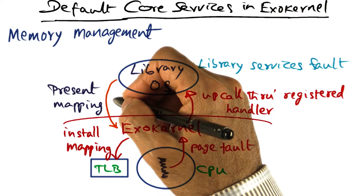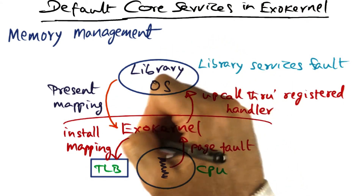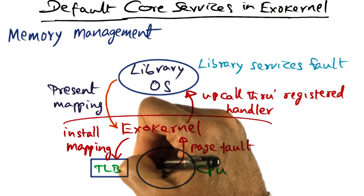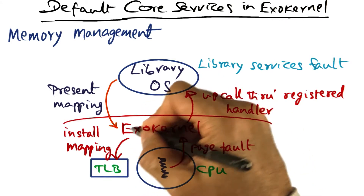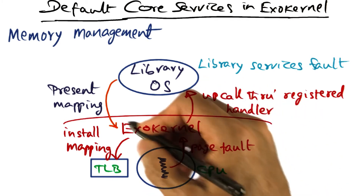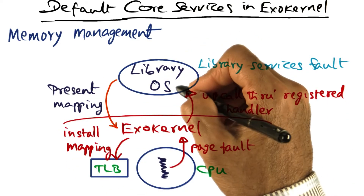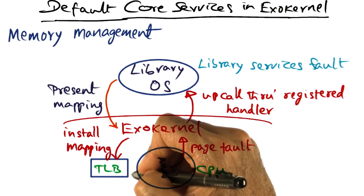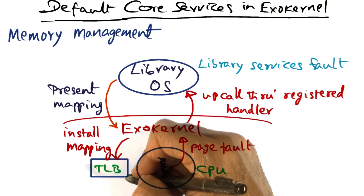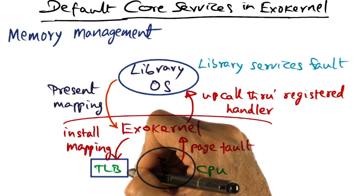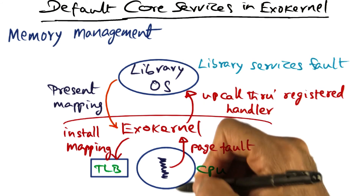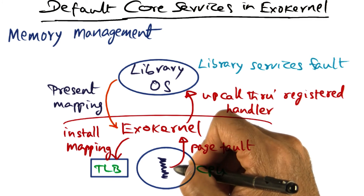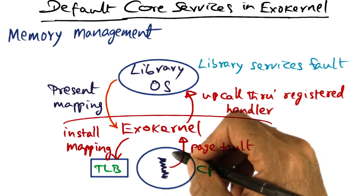Exokernel will validate the encrypted key presented by the library operating system, and assuming all is good, it will go ahead and install the mapping in the hardware TLB. This is a privileged operation, meaning it can be done only in kernel mode of the processor. That is the reason for the red line between the library operating system that runs at the non-privileged level and exokernel that runs at the privileged level. Once the entry has been installed in the TLB and the library operating system is scheduled on the processor again, when the same process generates the same virtual address, a valid mapping will be found and execution will proceed normally.